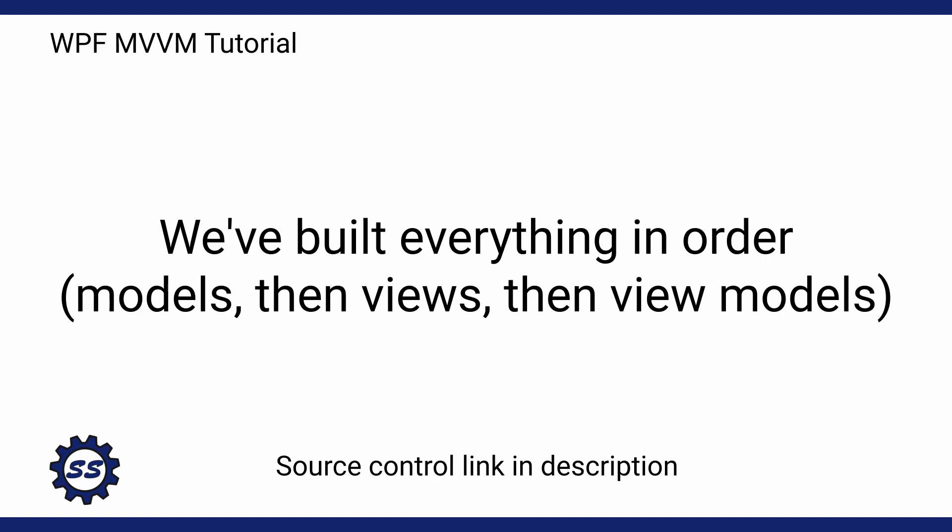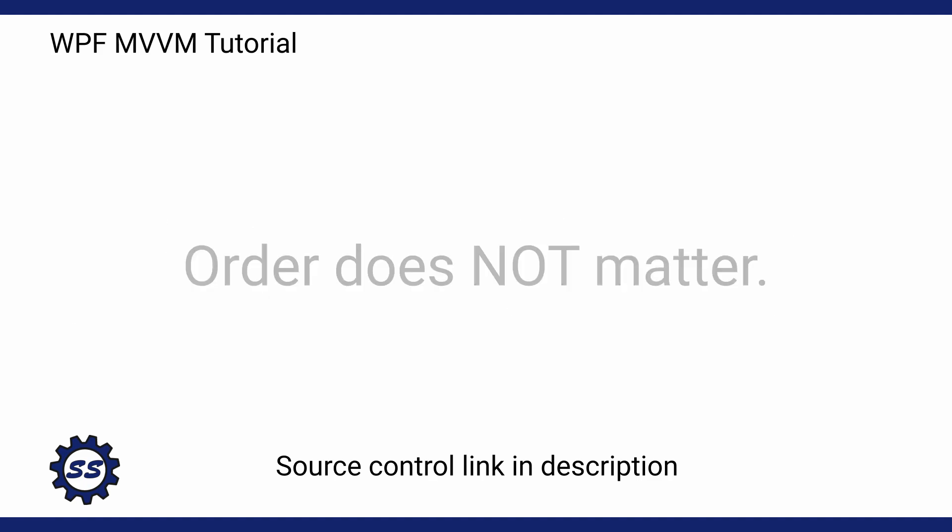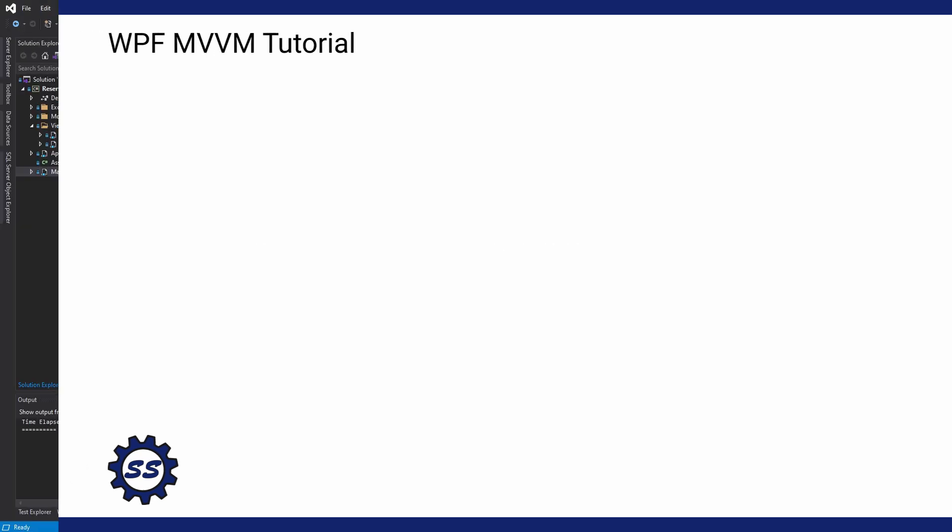When you're building your own application, you don't necessarily have to follow this order. You might build half of your views, half of your view models, and half of your models, and just iterate over and over again. But for this series, I felt it would be easier to do each of them one by one so we could focus on the characteristics of each layer.